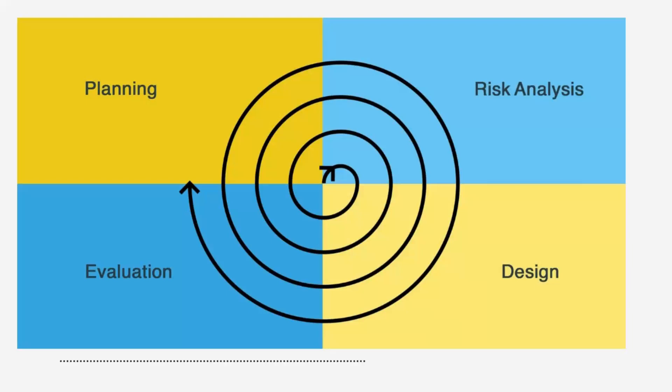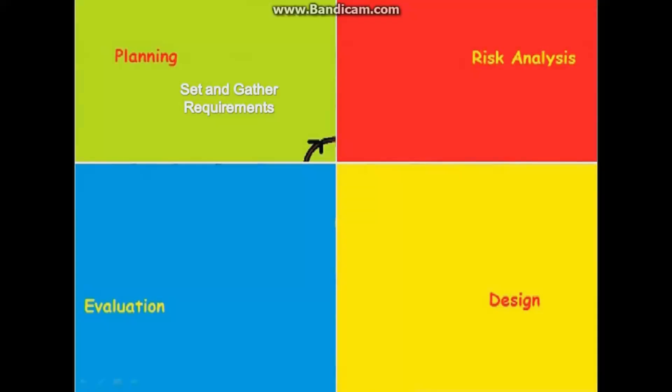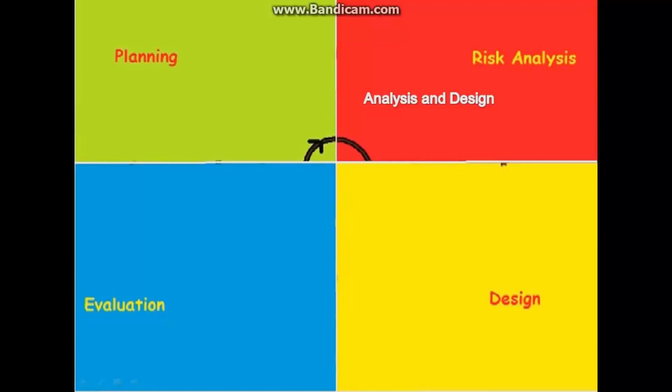A software project goes through these phases iteratively. This is the nature of the process. In the first phase, planning, requirements are gathered. In the second phase, risk analysis, risks and alternate solutions are identified and a prototype is produced.